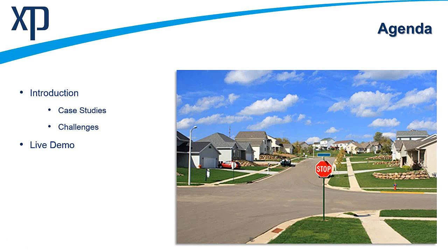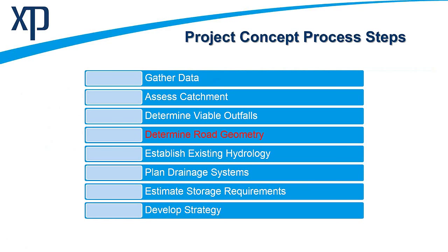The introduction will take five to ten minutes. When we come to designing infrastructure, we're really relating to local roads and estate road projects. We'll show how you can design a road layout quickly and easily, then look at different options and scenarios to tackle drainage, satisfying both the client and the approving authorities. Ideally, the concept process should begin by gathering data, assessing the catchment pre-development — looking at where existing blue-green corridors exist, the existing hydrology — before determining viable outfalls and then fitting the road geometry around that.